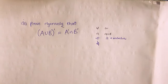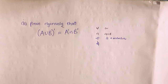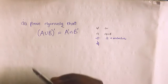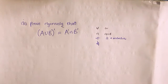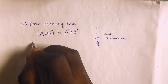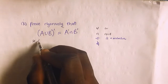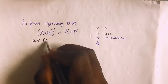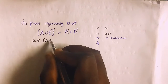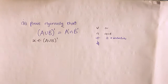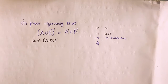You are given (A union B) complement equals A complement intersection B complement. Using De Morgan's Law, I'm going to let x be a member of (A union B) complement.